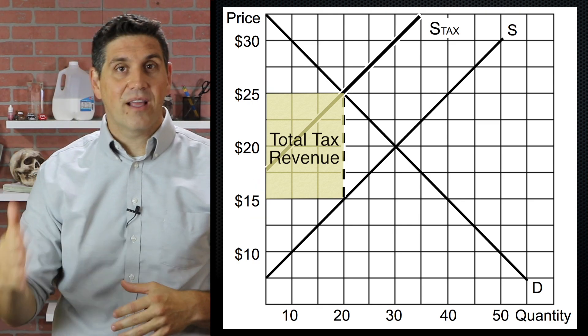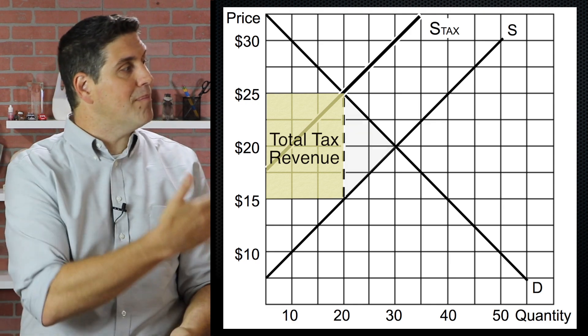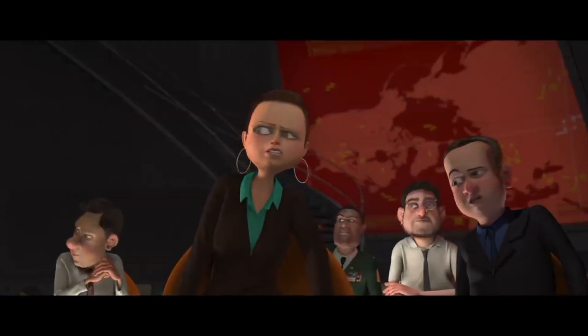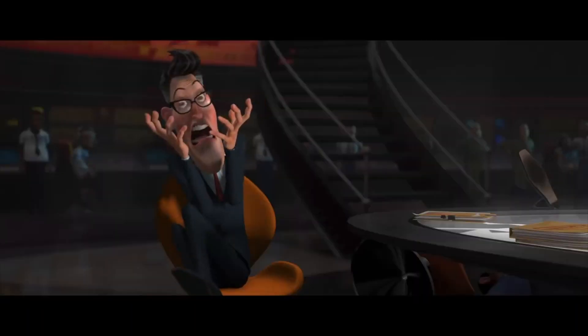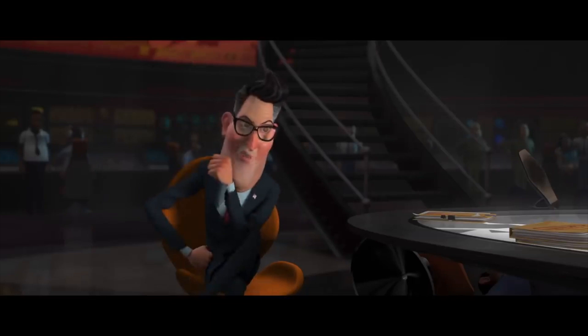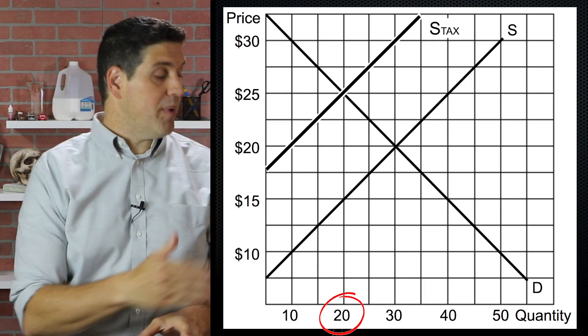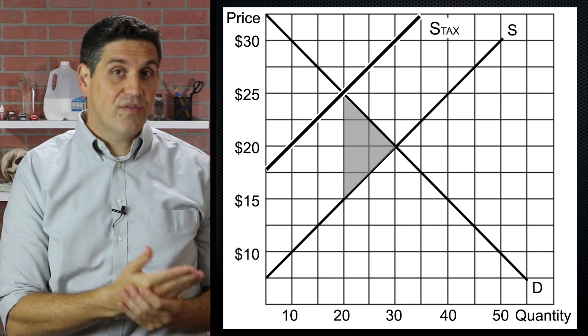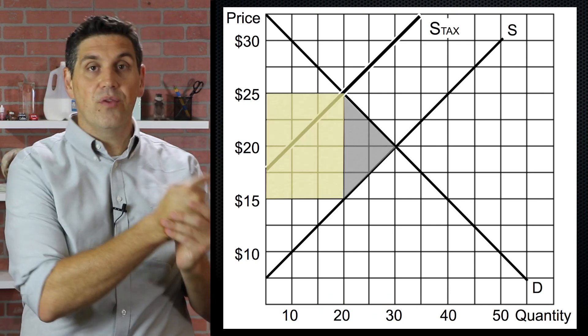Unlike a subsidy, taxpayers and the government aren't spending money. They're actually getting money. But the result is still deadweight loss. General, continue. 20 million chickens are being produced even though society wants 30 million chickens. So that's the area of deadweight loss. And that's the tax revenue that goes to the government.